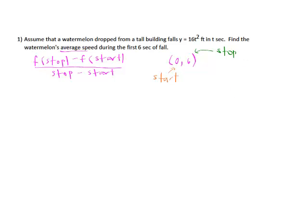When we set this up, we're going to use this as our function. We're going to have our stop, which is going to be 16 times six squared, minus where we started, which is going to be 16 times zero squared, all of that over six minus zero.